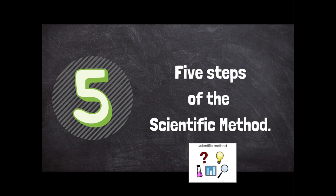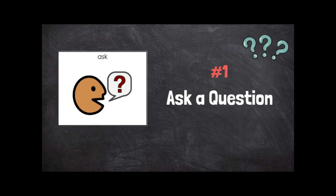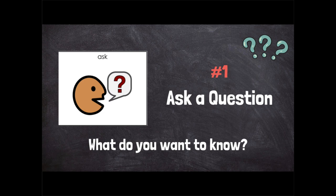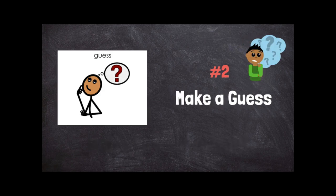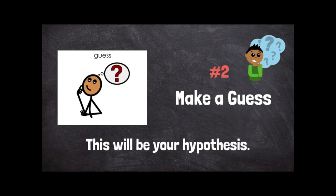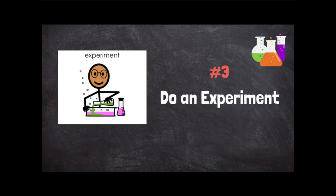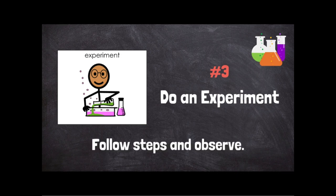Five steps of the scientific method. Number one: ask a question — what do you want to know. Number two: make a guess — this will be your hypothesis. Number three: do an experiment, follow steps.